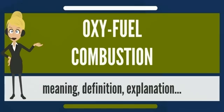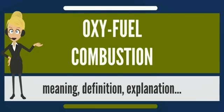Oxyfuel combustion has significant advantages over traditional air-fired plants. Among these are: the mass and volume of the flue gas are reduced by approximately 75%. Because the flue gas volume is reduced, less heat is lost in the flue gas. The size of the flue gas treatment equipment can be reduced by 75%. The flue gas is primarily CO2, suitable for sequestration.